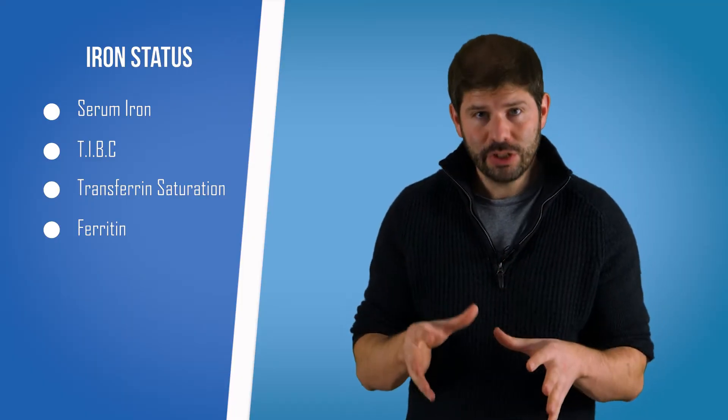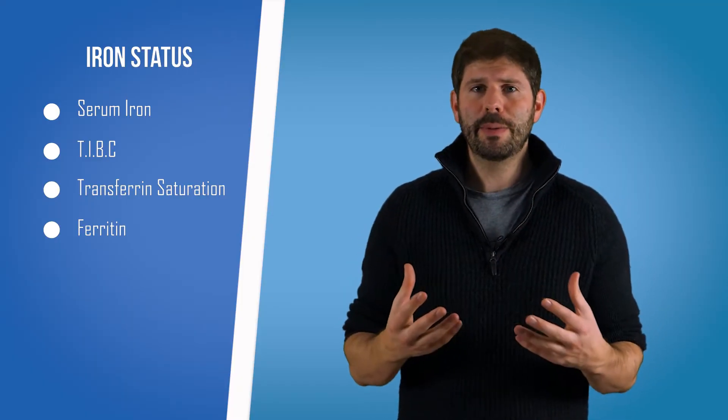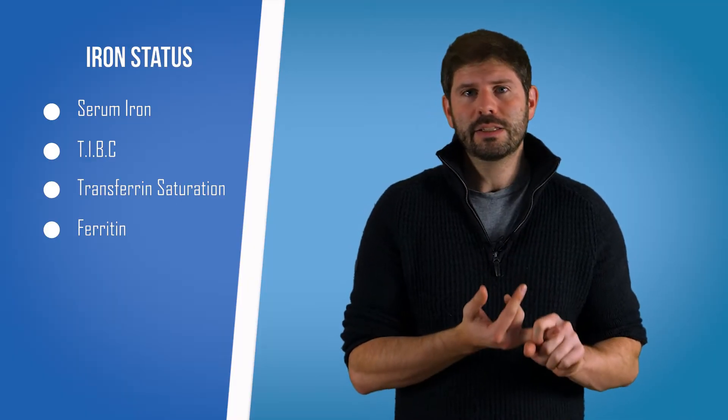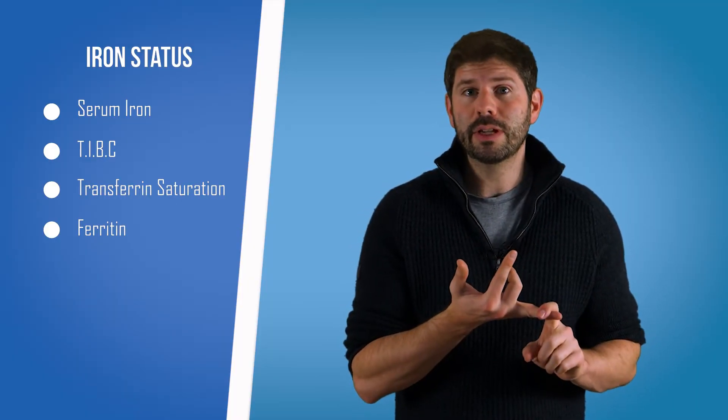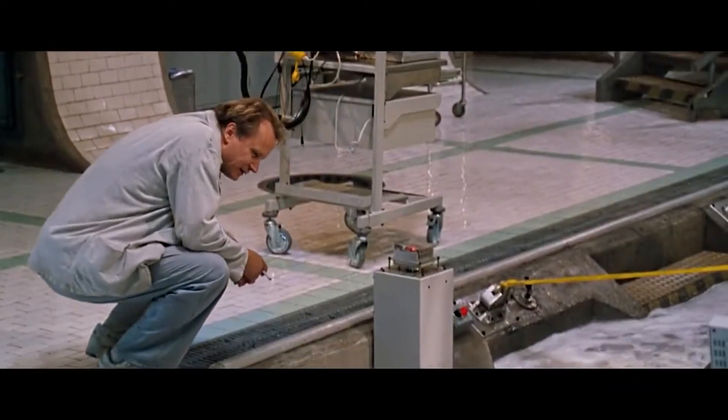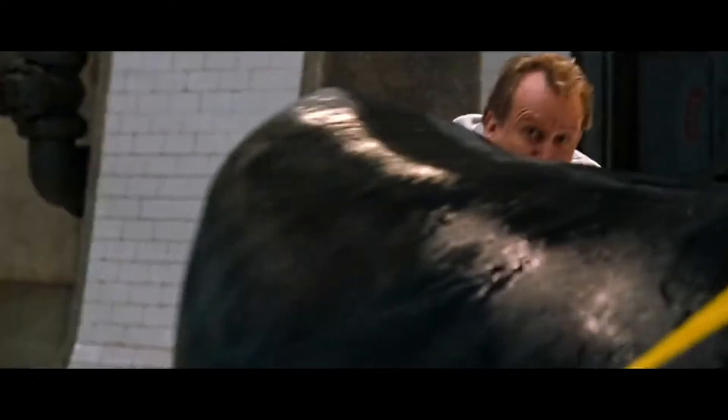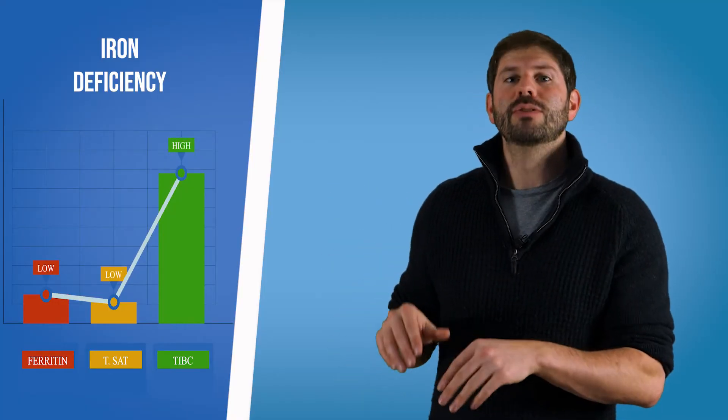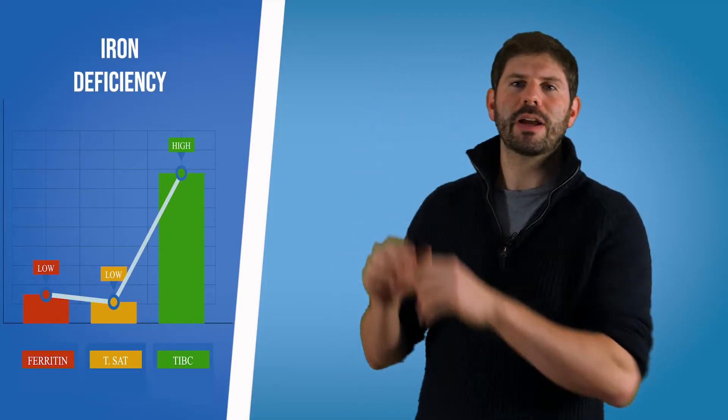So if you are iron deficient, which can happen in people who are not getting enough iron in their diet or in people who are bleeding—so for example, if you have heavy periods, if you've got some bowel upset and there's some blood coming out, or if a shark bites your arm off and you lose a load of blood that way—then you'll probably be iron deficient because you've lost a lot of red blood cells. So if that is the case, then your ferritin level is going to be very low, your transferrin saturation level is going to be very low, and your TIBC is going to be very high.